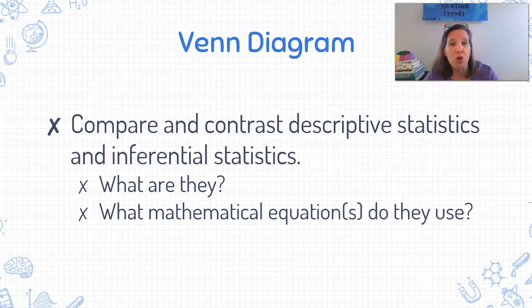In your video notes, I would like for you to draw a Venn diagram and compare and contrast descriptive statistics and inferential statistics. What is it? What mathematical equations do you use in each of them? And I do want you to remember descriptive statistics, we are describing our data. Inferential statistics, take the first five letters. Infer. We're trying to infer from our data, whether it's good. Is this good data? Does this data prove our hypothesis?